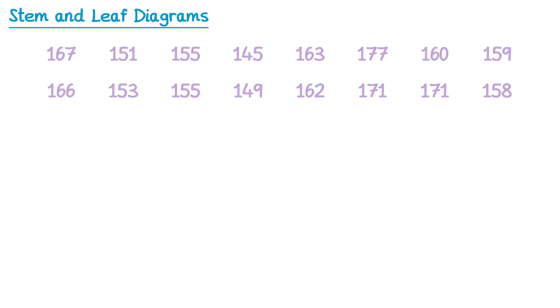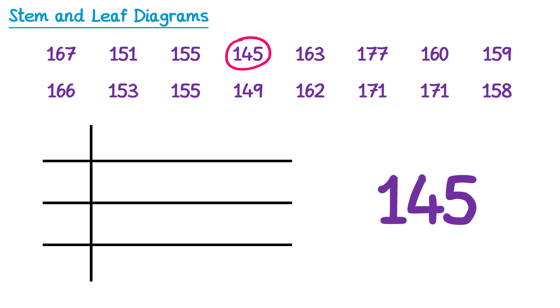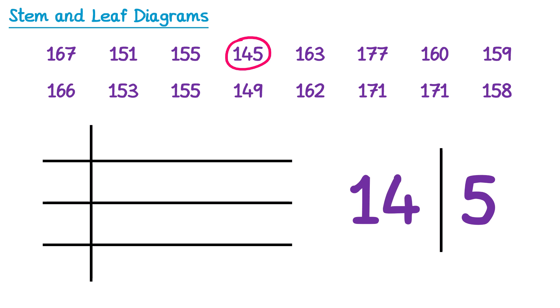Let's try a second diagram where things are slightly different. These are the heights of students in centimetres. The smallest number is 145. We have to think carefully about how to split it — do we have 1 as the stem and 45 as the leaf, or 14 as the stem and 5 as the leaf? A leaf should always be just one digit, so we use 14 as the stem and 5 as the leaf.